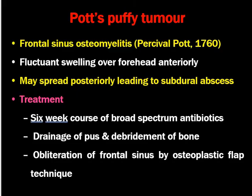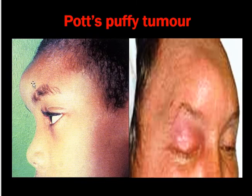Pott's puffy tumor is frontal sinus osteomyelitis occurring after chronic sinusitis, first described by Percivall Pott in 1760. It presents as a fluctuant swelling over the forehead anteriorly, leading to subperiosteal abscess, and involves both walls of the frontal sinus. Treatment is a six-week course of broad-spectrum IV antibiotics, drainage of pus, debridement of bone, and obliteration of the sinus by osteoplastic flap technique.